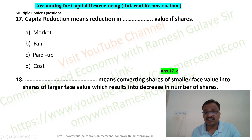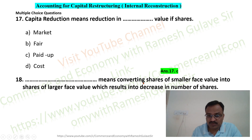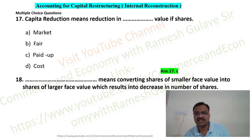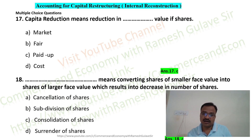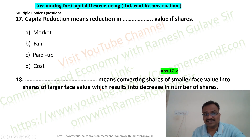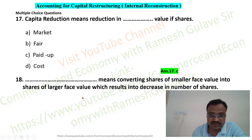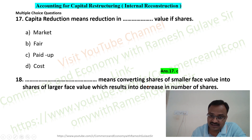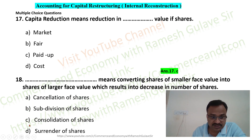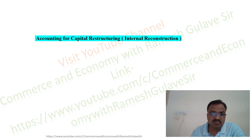The next question asks: what means converting shares of smaller base value into shares of larger base value? For example, a share of Rs. 10 face value is converted into a share of Rs. 100 face value. In this process the number of shares decreases. This process is known as consolidation of shares. Option C is the right answer.